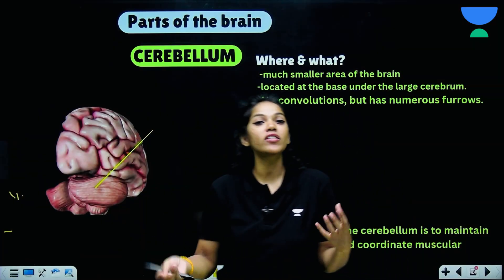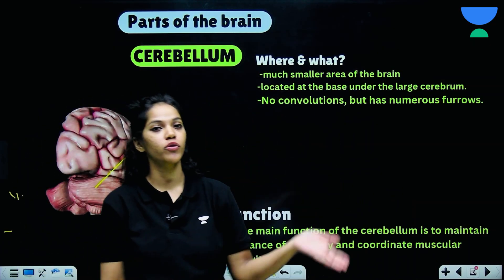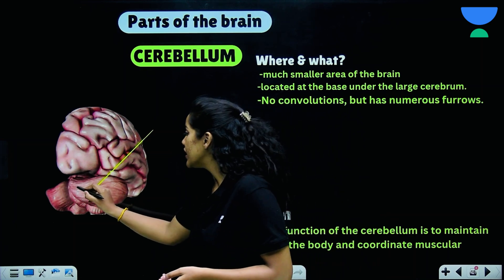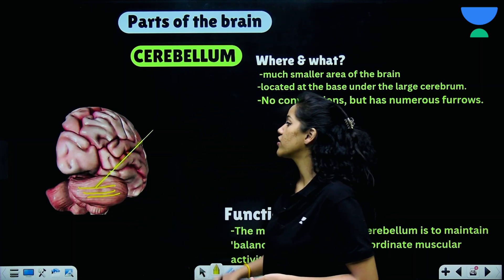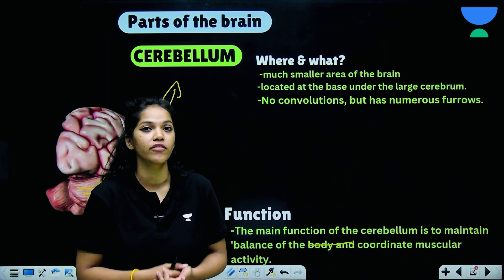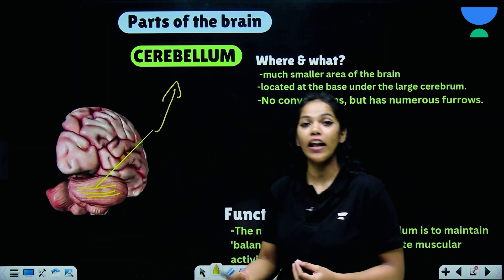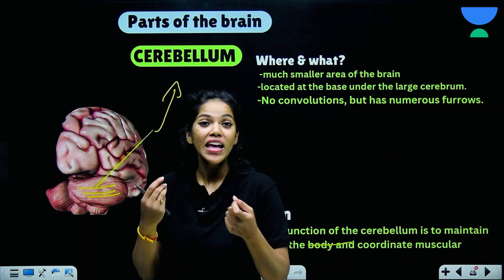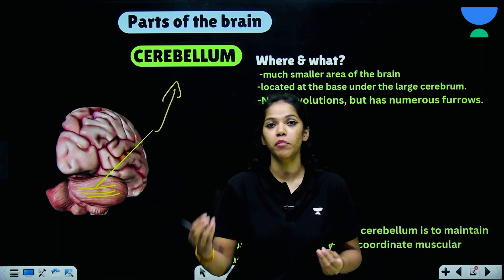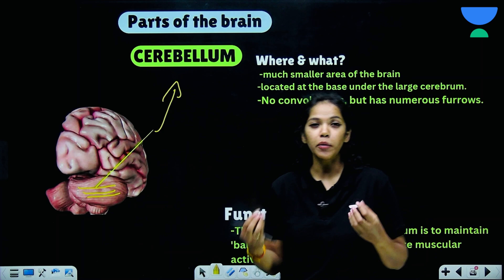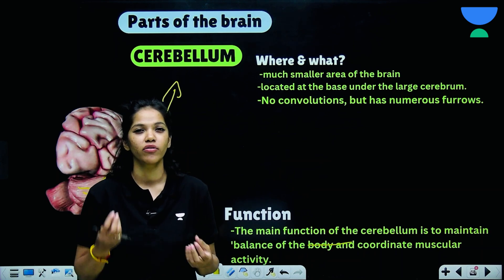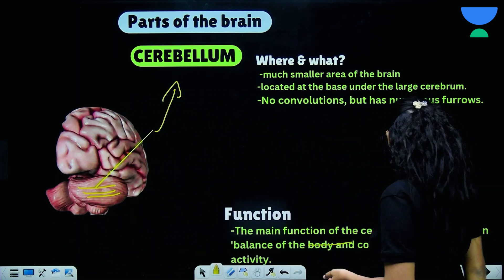The cerebellum is a much smaller part of the brain, located right at the base of the cerebrum. Unlike the cerebrum, it does not have convolutions but has folds called furrows. The main function of the cerebellum is to maintain balance and coordinate muscular activities. This is why, when a person is under the effect of alcohol, the alcohol affects the cerebellum, making the person unable to walk steadily.